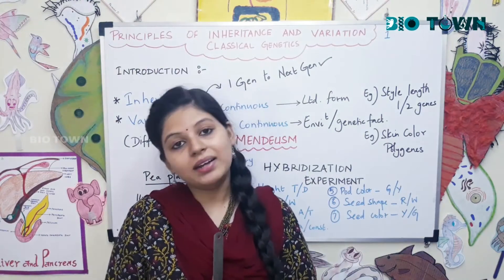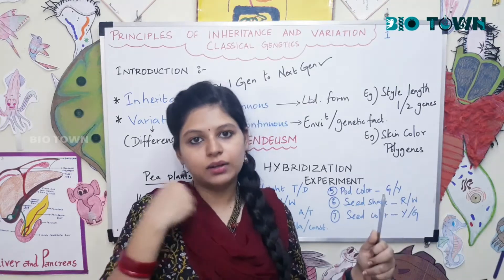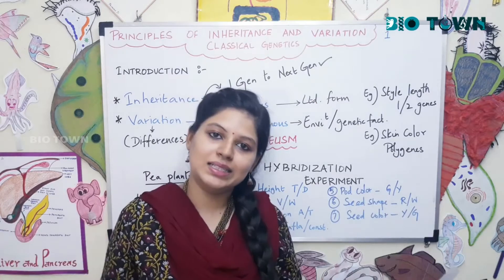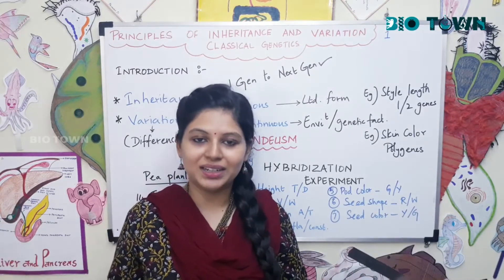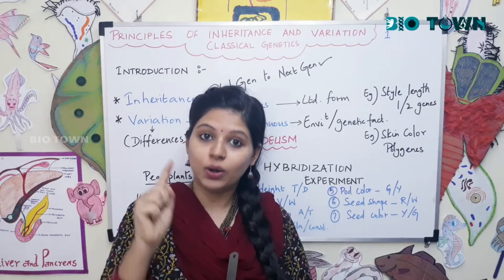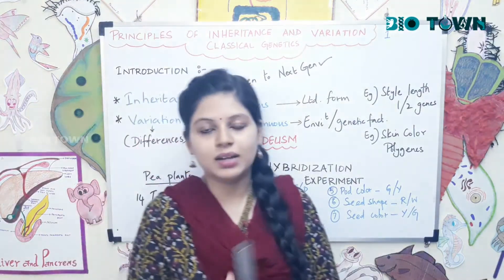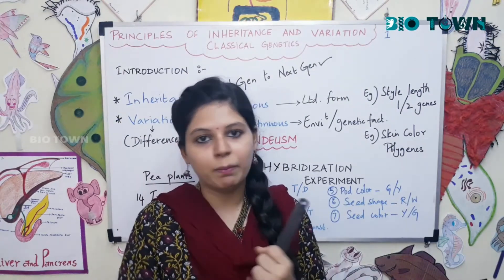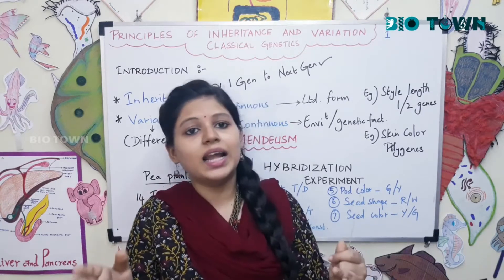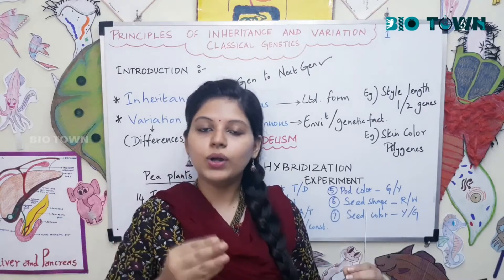Mendel was born into a family of farmers. In his backyard he had many pea plants, and he wanted to do experiments with them — leading to monohybrid and dihybrid crosses. Why did Mendel choose the pea plant? First, it was easily available because it was present in his backyard. Second, it had a very short lifespan of just one year.